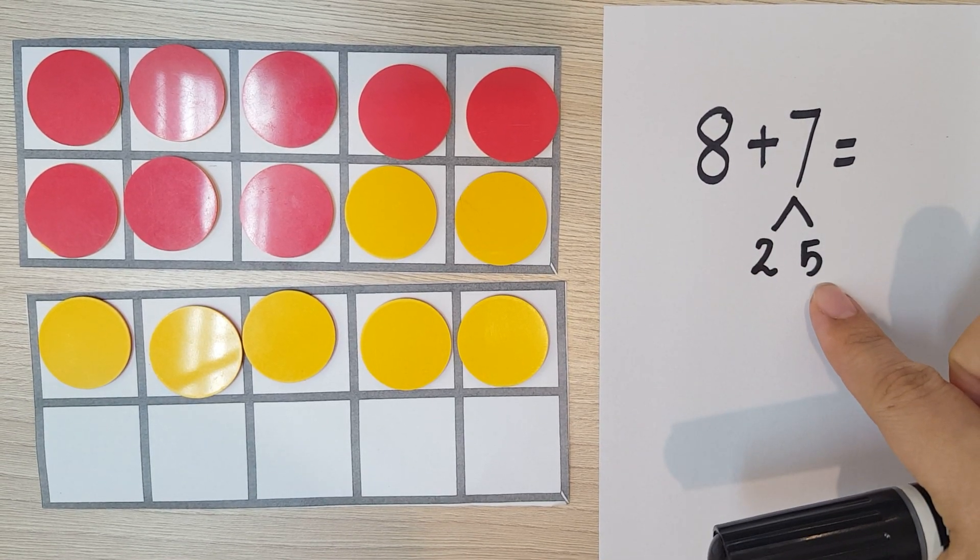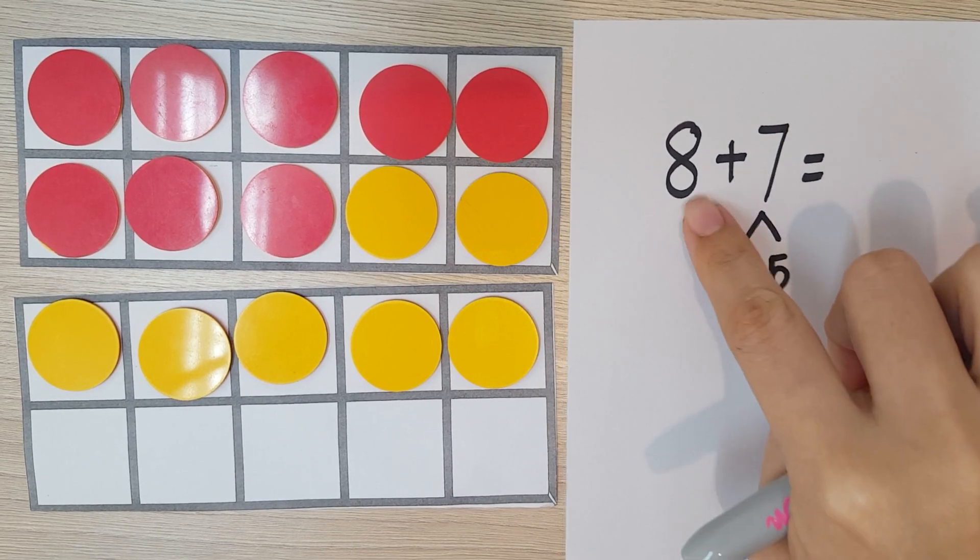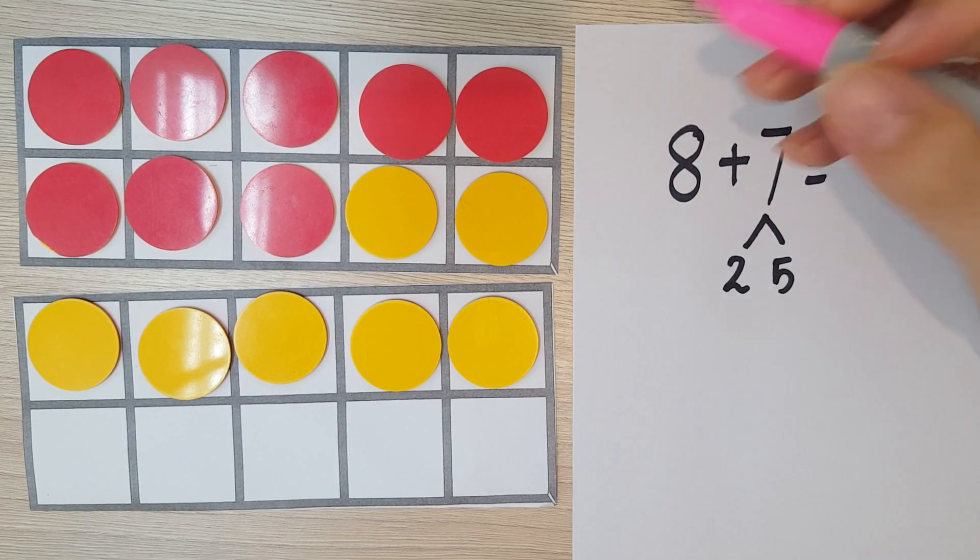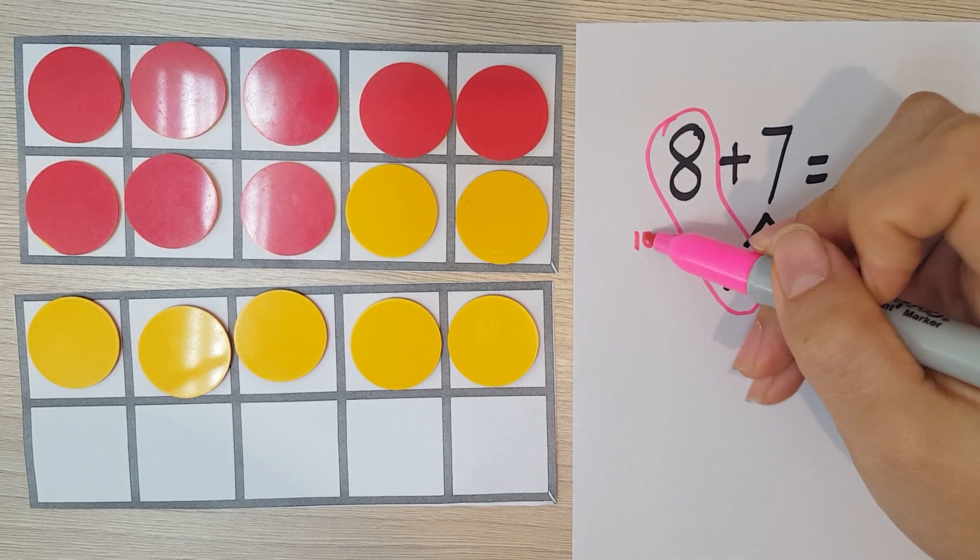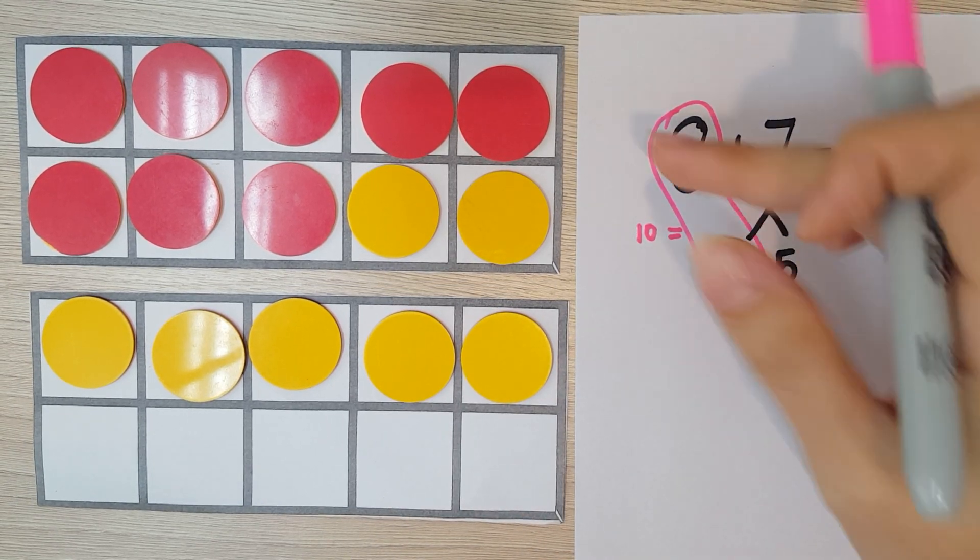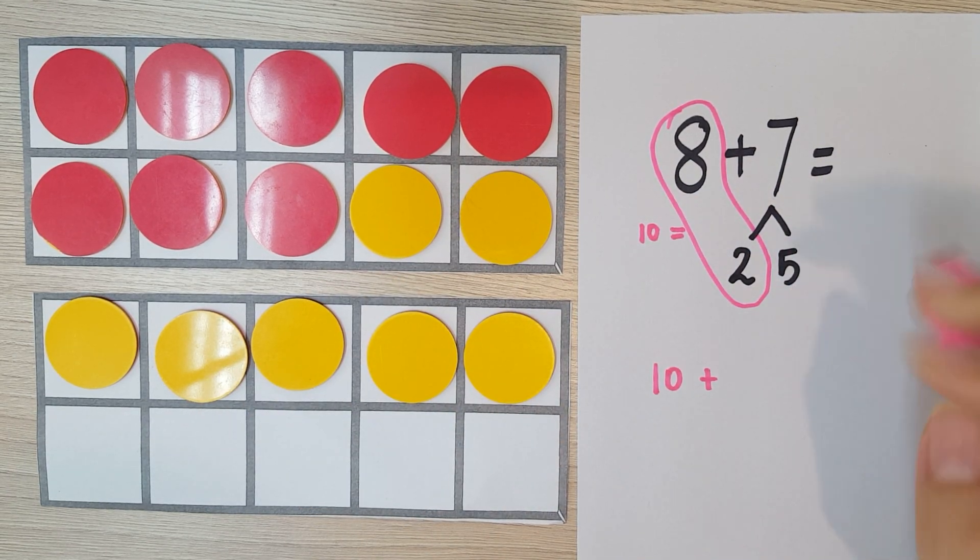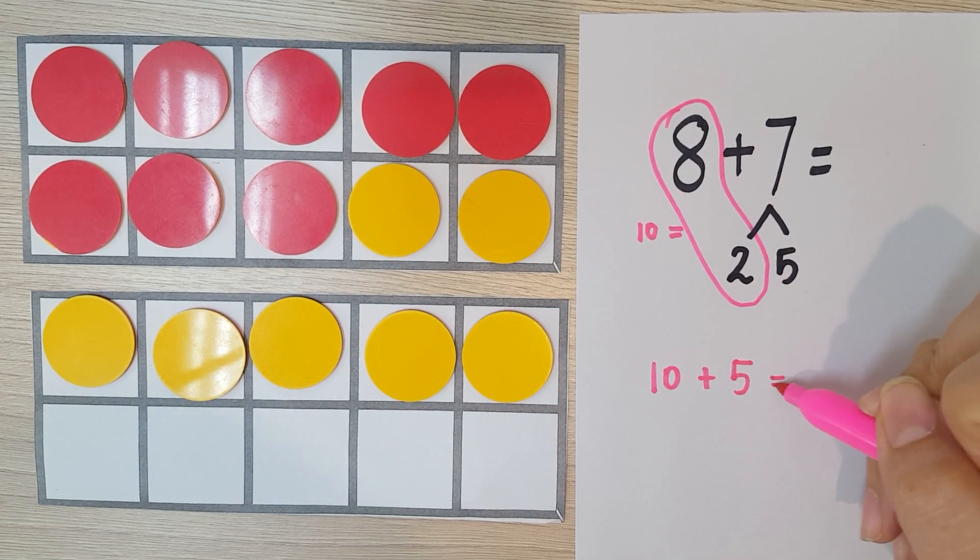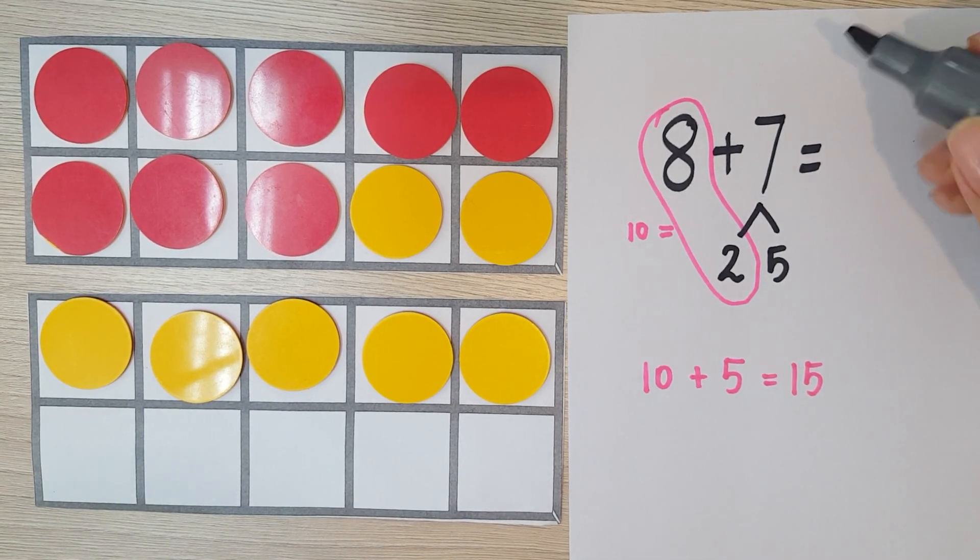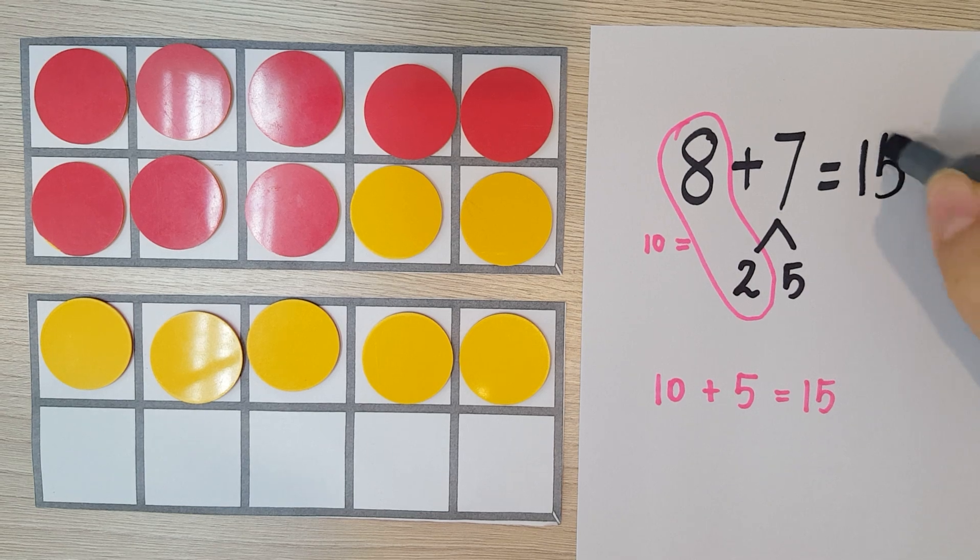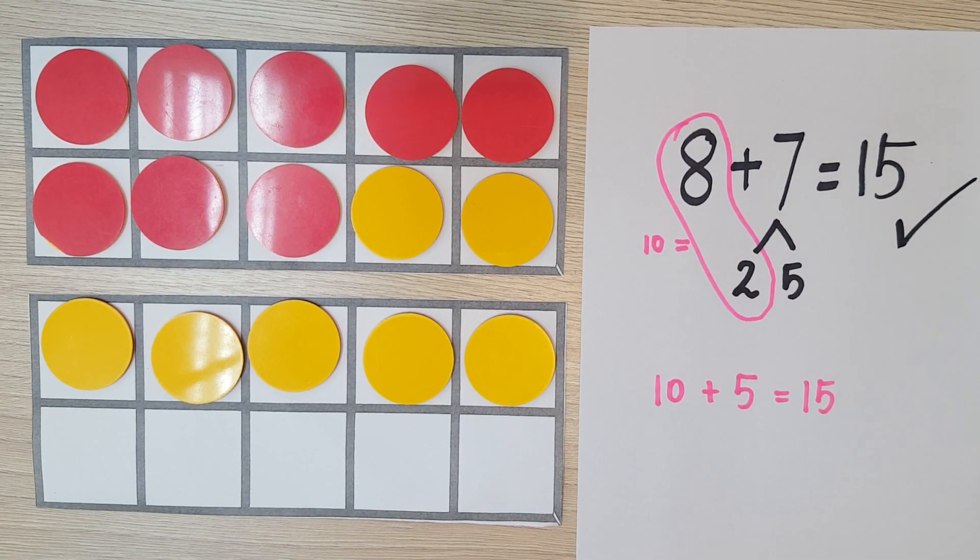Okay, and so we have this 2, we put it with the 8 here, so we have this which gives us a 10, right? So this is the same as saying 10 plus this 5 that is still here equals 15. And so 8 plus 7 is 15. 10 and 5 make 15. Yay!